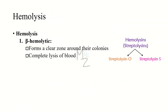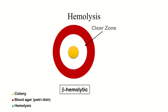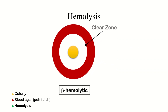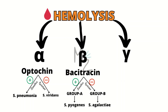Beta-hemolytic bacteria form a clear zone around their colonies due to complete lysis of blood. Beta-hemolysis is due to the production of hemolysins called streptolysin O and streptolysin S. The yellow one is the colony, white is the clear zone formed around the colony due to complete hemolysis, and red is the blood agar petri dish. Beta-hemolytic bacteria are further classified based on bacitracin sensitivity: bacteria sensitive to it are termed Group A (e.g., strep pyogenes), and resistant ones are termed Group B (e.g., strep agalactiae).